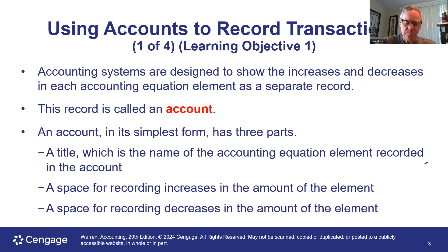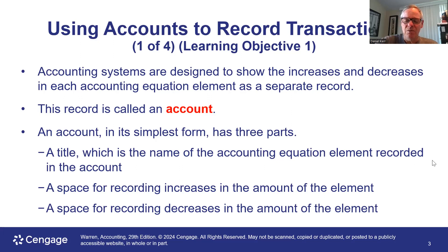The rules for how you increase or decrease an account are different depending on which side of the accounting equation you're on. Think of driving in Bermuda or England — most rules of driving are the same, but they drive on the left-hand side instead of the right. Keep that analogy in mind when we talk about the rules of accounts in terms of how they're increased and decreased. The key keyword here is 'account,' which replaces the columns we used in chapter one.